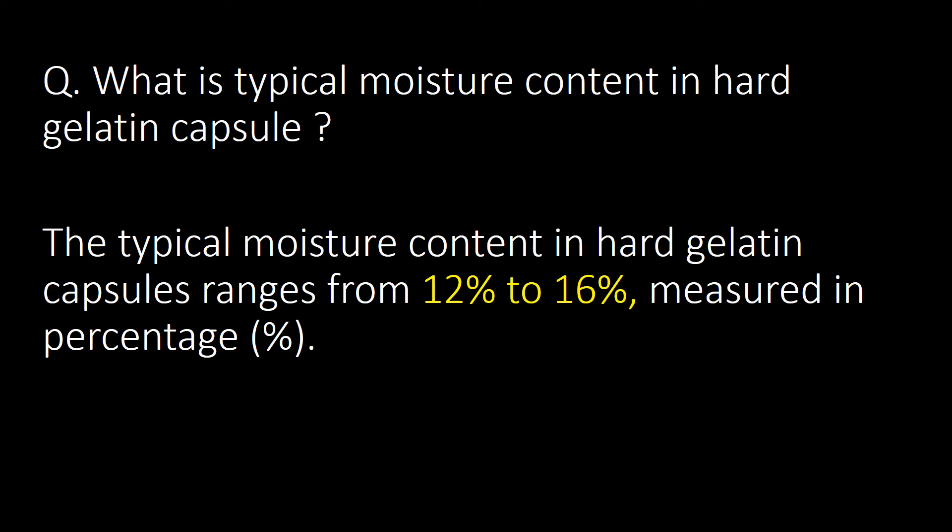What is the typical moisture content in hard gelatin capsules? The typical moisture content in hard gelatin capsules ranges from 12% to 16%, measured in percentage.